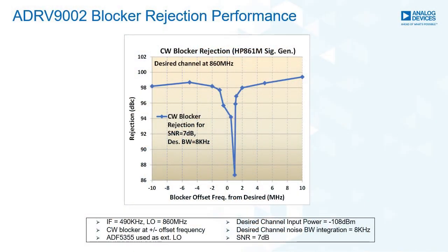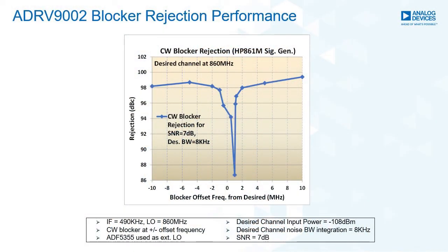This is thanks to the true software-defined nature of the ADRV9002. Using this IF mode, we are going to input an 8 kHz signal at minus 108 dBm, and we are going to sweep this large continuous-wave blocker next to it in frequency and amplitude to get to an SNR of 7 dB. The receiver achieves in excess of 98 dB blocker rejection in this test, with an image rejection of about 86 dB.